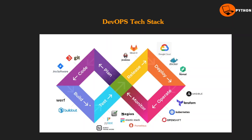Next is the build phase. We use a Jenkins pipeline. Build tools include Maven, Scala, Python, and Go — based on the programming language used in the coding phase, we will use the same kind of compiler in the build phase.